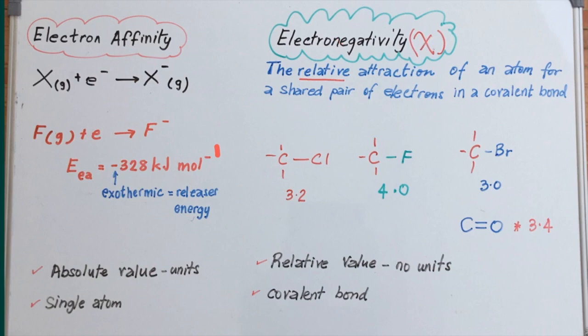Electronegativity, however, is not measured in relation to an individual atom, but it's about the attractiveness of a particular atom for the electrons in a shared covalent bond.